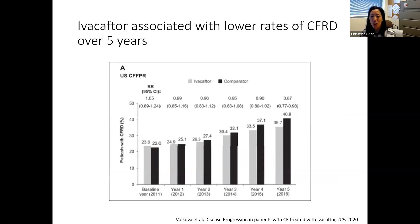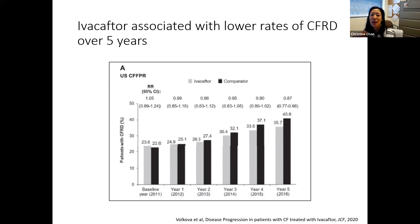Some potentially exciting impacts of CFTR modulator therapy: data have looked at the effects of Ivacaftor after it was used commercially for five years and shown — in U.S. registry data — that Ivacaftor was associated with lower rates of CF-related diabetes compared to a comparator population. This suggests that with increased uptake of highly effective modulators, these therapies — once widely available to the greater population over time — could really modify the course of CF-related diabetes and the problems we'll see from it.